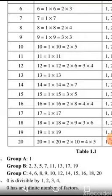As we see in Group B, there are numbers which have only 2 factors, which means these are all prime numbers. In Group C, all are composite numbers because all these numbers have 2 or more than 2 prime factors.